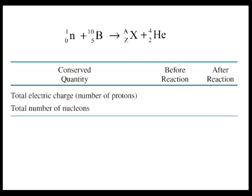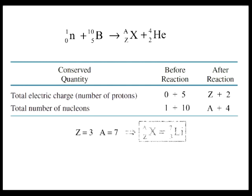Since the total electric charge of the nucleons is conserved, we can set the total number of protons before the reaction equal to the total number after the reaction. So, 0 plus 5 equals Z plus 2. Since the total number of nucleons is conserved, we can set the total number before the reaction equal to the total number after the reaction. Therefore, 1 plus 10 equals A plus 4. From these two equations, we get Z equals 3 and A equals 7, and our unknown nucleus is identified as lithium-7.